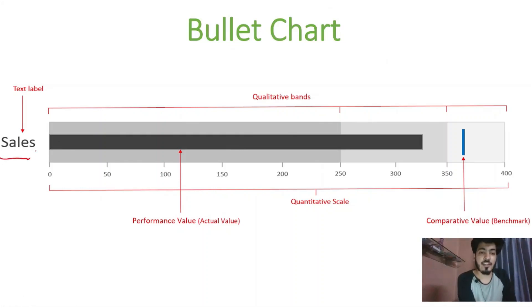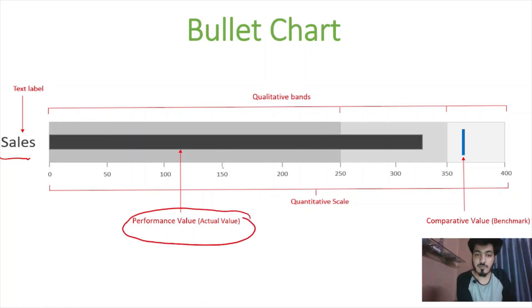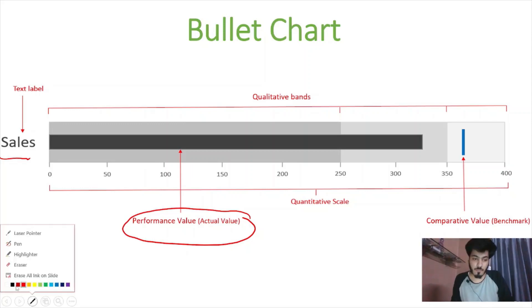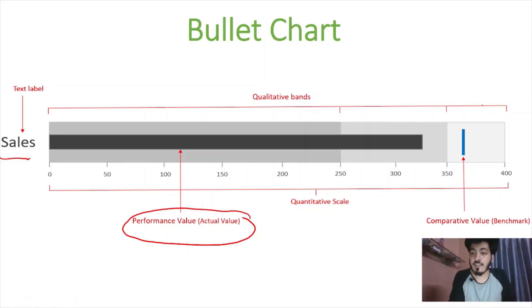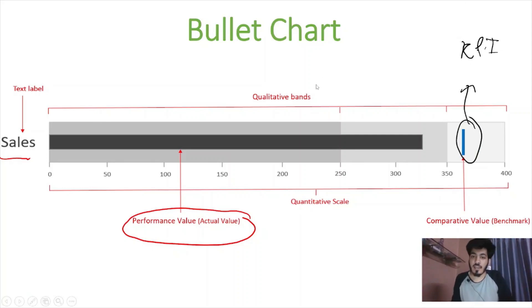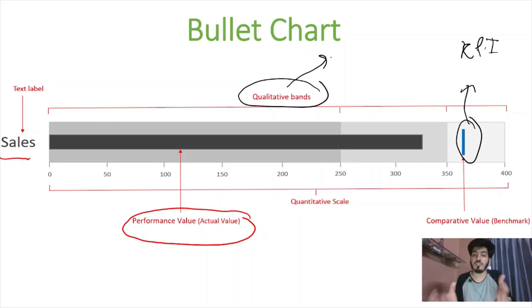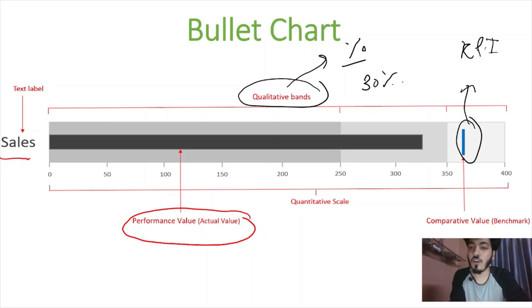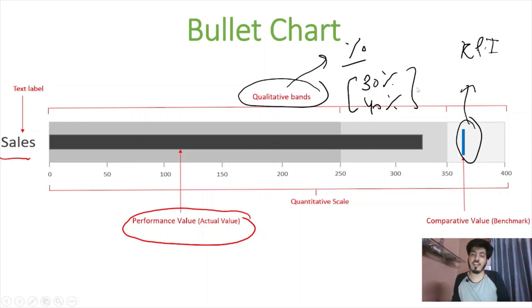A real bullet chart looks like this: the dark color line represents the actual value, and the reference line represents the benchmark or KPI. The quantitative bands show distribution — for example, whether sales achieved 30% or 40% of the target. This is how we give distribution bands in a bullet chart. Let's jump to Tableau now.